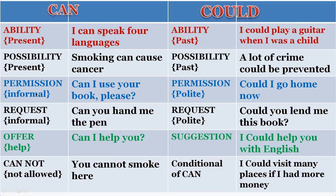If you want permission in an informal way: 'Can I use your book please?' For something more polite and formal: 'Could I go home now?' Can is used more in an informal way and could is used more in a formal way. Similarly, for an informal request: 'Can you hand me the pen?' For a formal, polite request: 'Could you lend me this book?' This is the only difference.